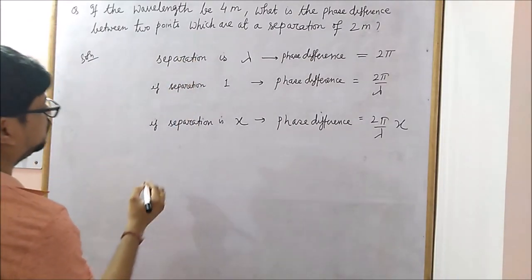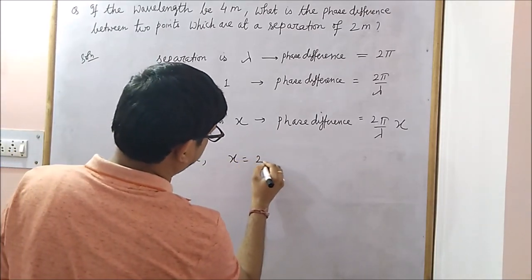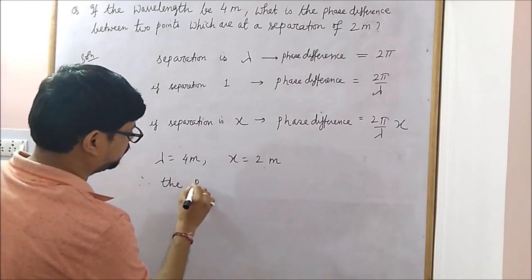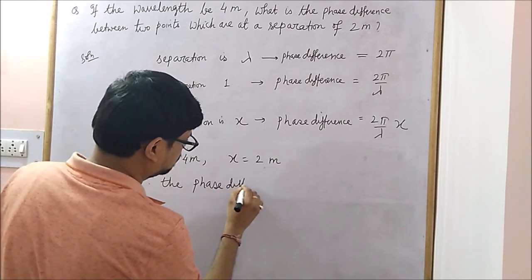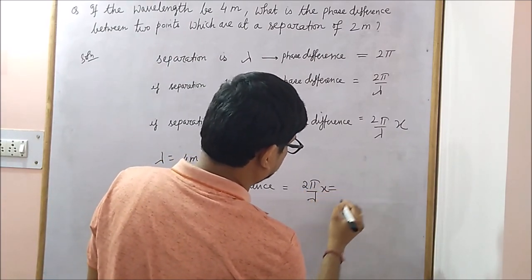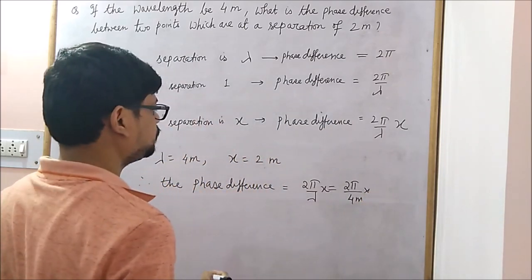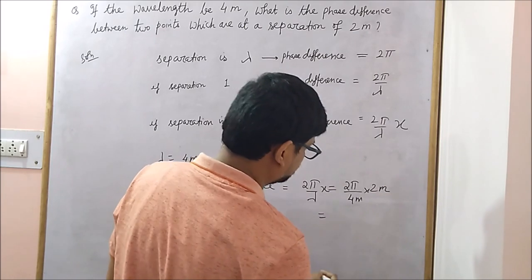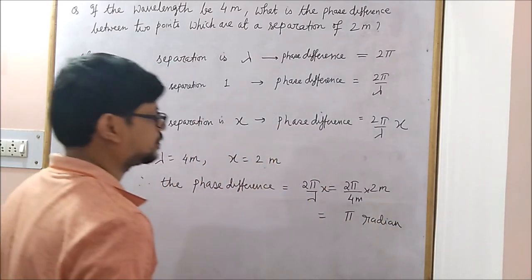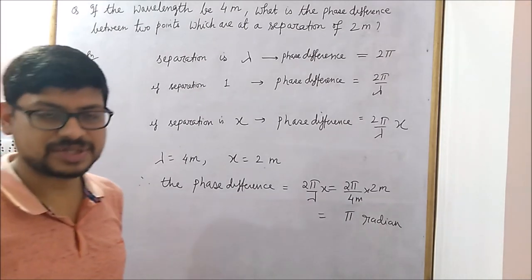Here we have been given wavelength lambda equal to 4 meter and the separation x is 2 meter. Therefore the phase difference is equal to 2 pi by lambda times x, that is 2 pi by 4 meter into 2 meter, which equals pi radians. This is how we find out the phase difference between two points which are having some separation x.